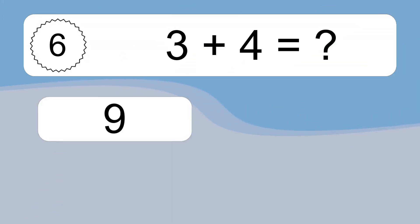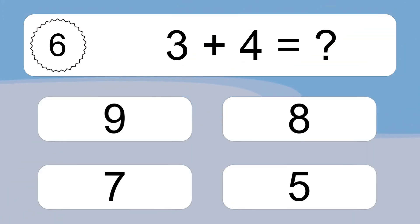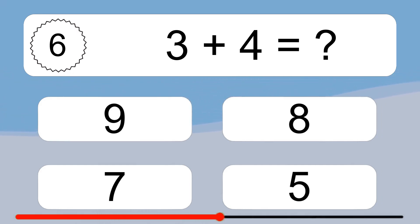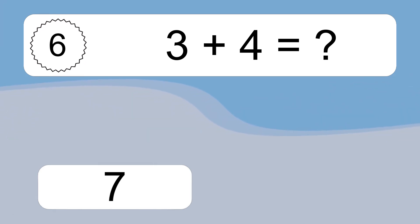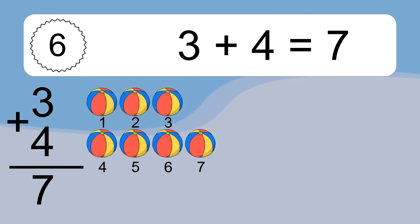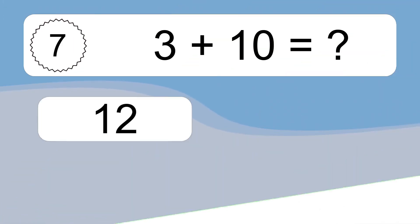3 plus 4 equals 7. Let's count it: 1, 2, 3, 4, 5, 6, 7.